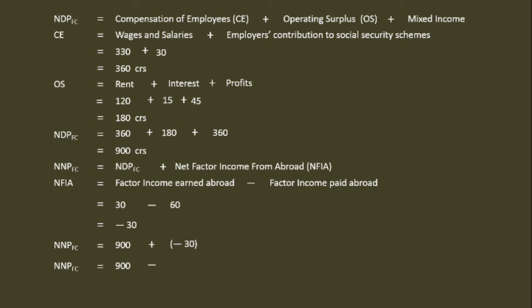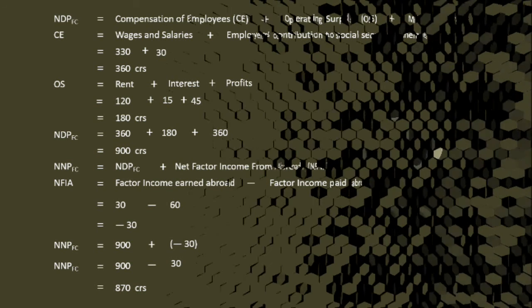Net national product at factor cost is equal to 900 plus (minus 30), which equals 870 crores. Therefore, national income is 870 crores.